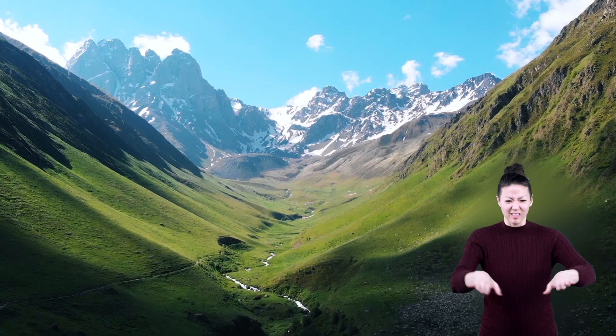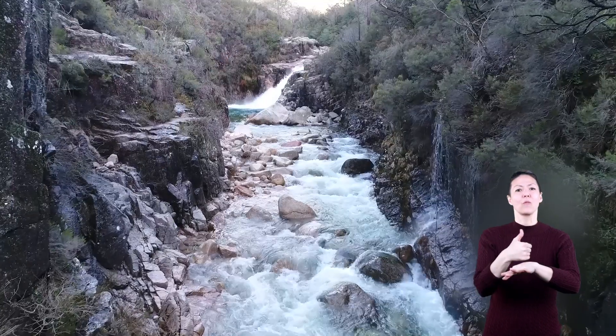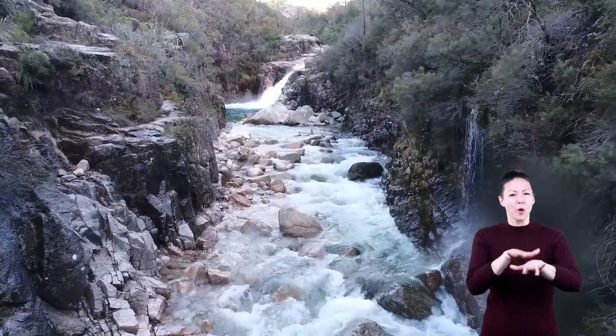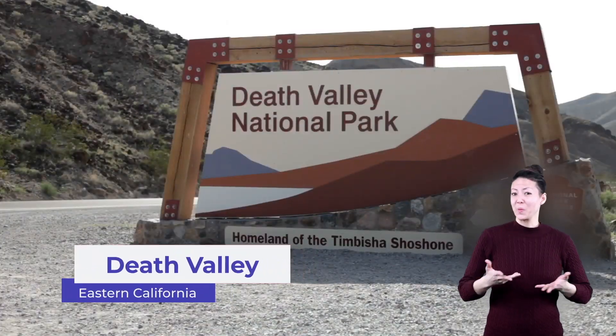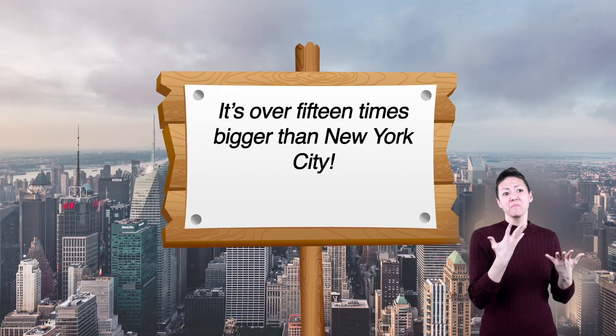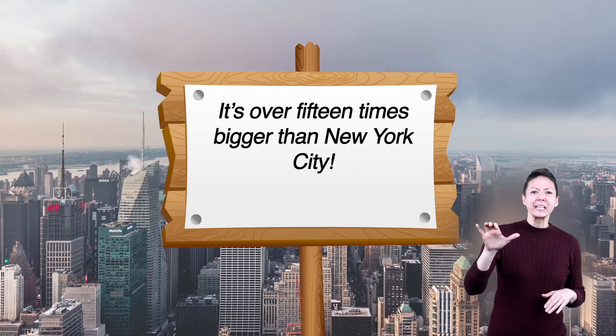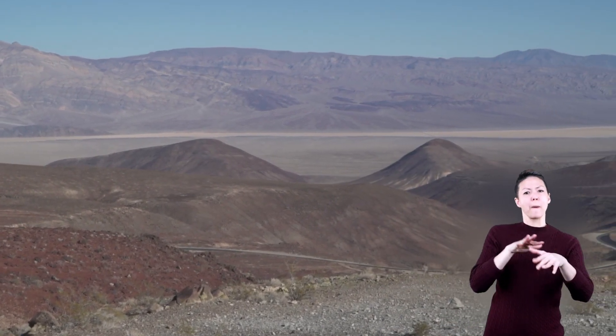Valleys, on the other hand, are low-lying areas that tend to sit between mountain ranges and other big landforms. Valleys are formed over time as rivers flow from the mountains above. The most well-known valley in the United States is Death Valley. This valley is the lowest, hottest, and driest area in all of North America. It's found on the east end of California and is over 15 times bigger than New York City. The edges of this valley, like many others, are surrounded by mountains.